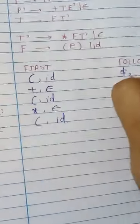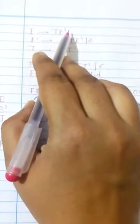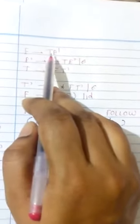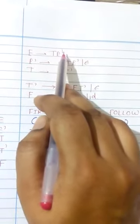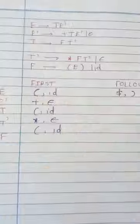In the production T → ... E′, after T comes E′. So FOLLOW(T) must include FIRST(E′). FIRST(E′) = {+, ε}. So we add '+' to FOLLOW(T). Since FIRST(E′) contains ε, T becomes effectively the last element, so FOLLOW(T) must also include FOLLOW(E), which is {$, ')'}.